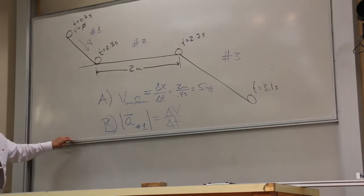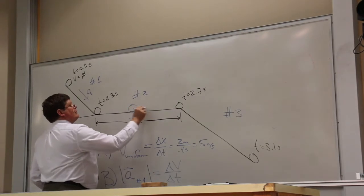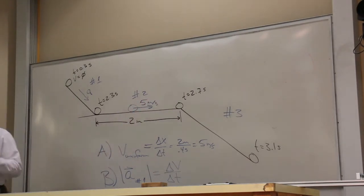The key is recognizing that this velocity on ramp two is uniform.